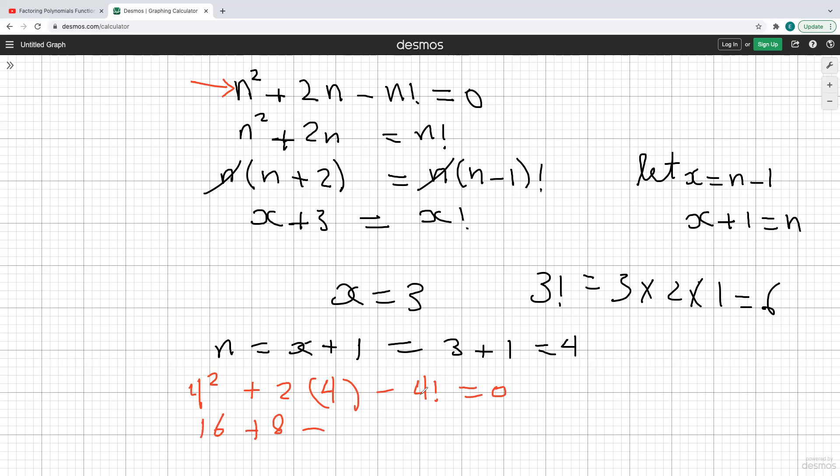4 squared is 16 plus 8 minus 4 factorial. As we said, 4 times 3 times 2 times 1. So that's basically 4 times 3 factorial, which we all know here. So 4 times 6 is 24. So that's just going to be minus 24. And 16 plus 8 is 24. 24 minus 24 is 0. So that's checked.